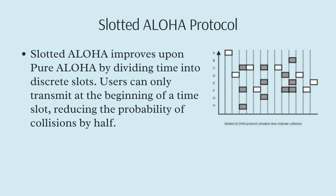To improve upon Pure Aloha, the Slotted Aloha protocol was introduced. This version divides time into discrete slots, and users can only transmit at the beginning of a time slot. This approach reduces the probability of collisions significantly. By organizing transmissions into time slots, Slotted Aloha reduces collisions by half, achieving a maximum channel utilization of about 37%. This method almost doubles the efficiency compared to Pure Aloha and represents a significant improvement in managing shared communication channels.